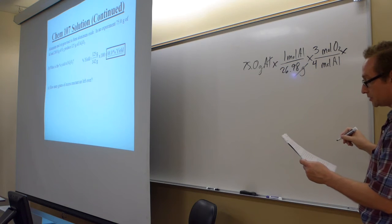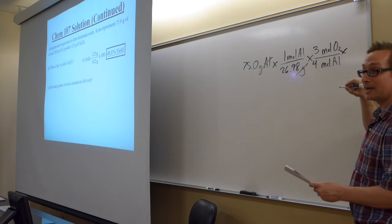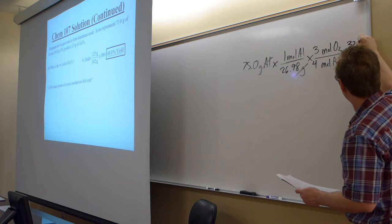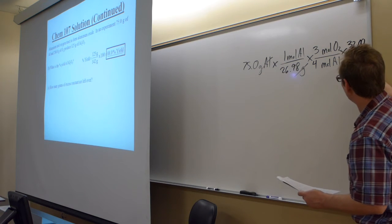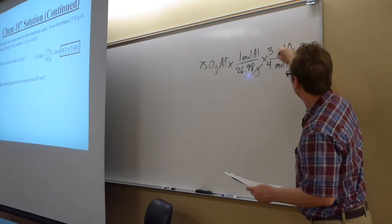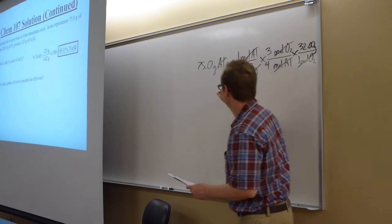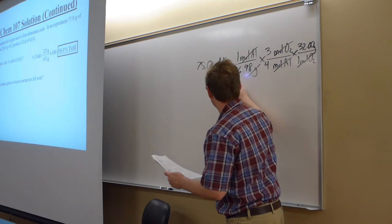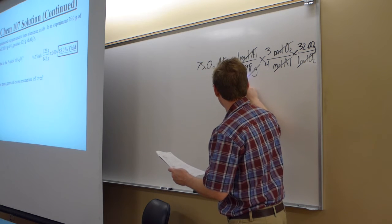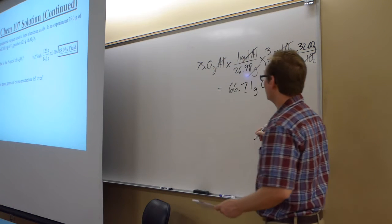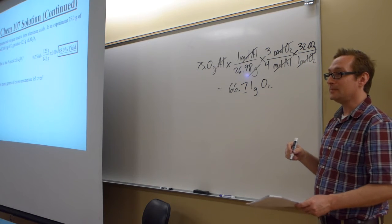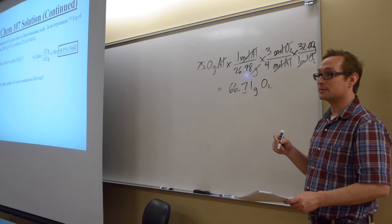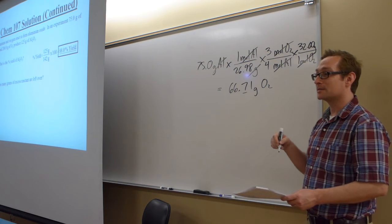And then converting that moles of oxygen to grams, remember O2 has a molar mass of two times 16, so 32 grams for every one mole of O2. So that would give us a mass of oxygen of 66.71 grams of O2. So what does this grams of O2 represent? Does it represent the mass left over of oxygen, or does it represent the mass that was used up of oxygen? It represents the mass that was used of oxygen.